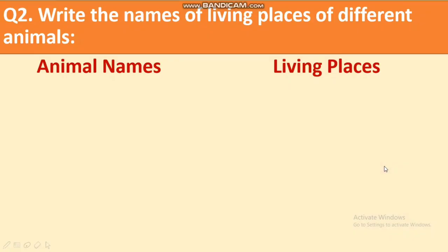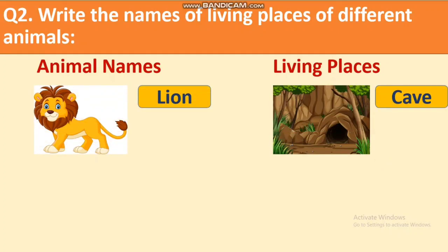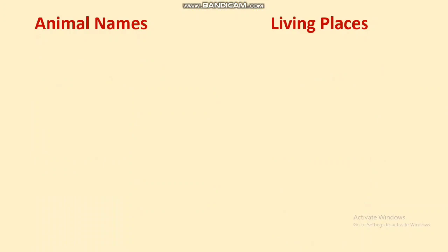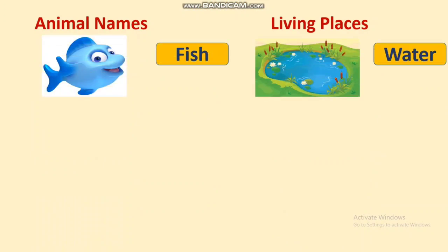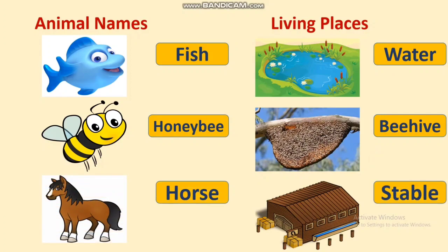Next question: write the names of living places of different animals. We have to write animals and the places where they live. First, lion — lion lives in a cave. Next, cow — cow lives in a shed, you all must have seen it. Next, fish — fish lives in water. Honeybee — honeybee lives in a beehive. Then we have horse — horse lives in a stable. These are the places where the animals live.